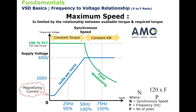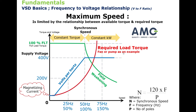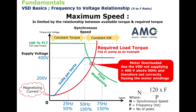The field begins to weaken, and if we apply a load such as a pump or a fan, where these two lines cross over is where the rotor will start to get behind the stator windings or the rotating field, and there will be more slip, therefore more current drawn, and the motor will overload.